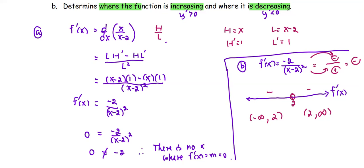In this case, we can say that the function is decreasing on two intervals: negative infinity to 2 and 2 to positive infinity.